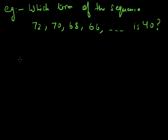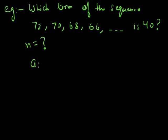The question asks us to find out which term of this sequence is equal to 40 — that is, what is the value of n for which the nth term is 40. For this, we use the formula for finding out the nth term of an AP, which is: aₙ = a + (n-1)d.